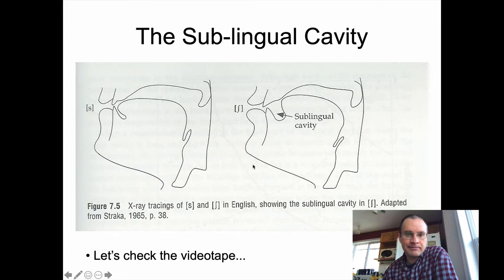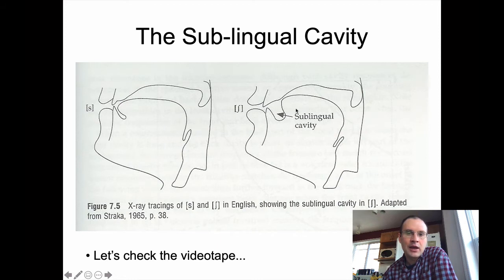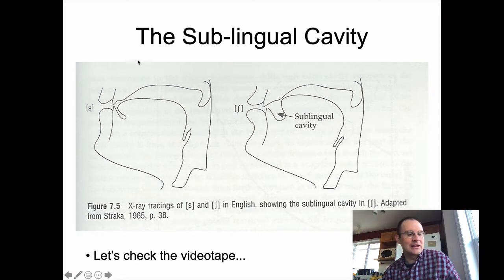Here's a mid-sagittal view of that sublingual cavity — that little gap between the bottom of the tongue and the bottom of your mouth, which you don't really get with S because your tongue is too far forward to create much of a gap there. That gives you more resonance, or a longer resonating tube, which would lead to lower frequencies resonating in the Esch as opposed to the S.